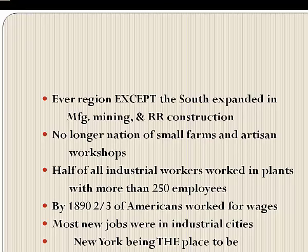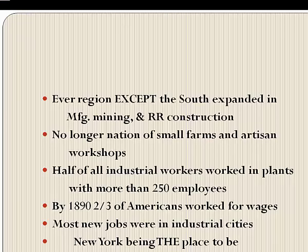By 1890, two-thirds of American workers worked for wages, which made dreams of economic independence — owning your own farm or business — kind of unattainable. Between 1870 and 1920, a new working class developed, with 11 million Americans moving from farms to the city, and 25 million more immigrants coming in from overseas.